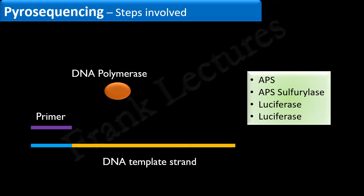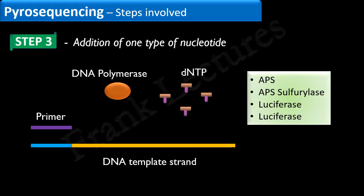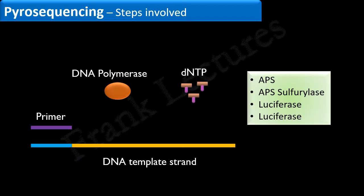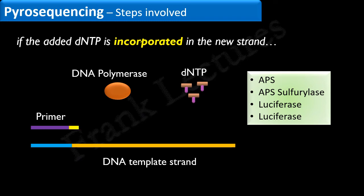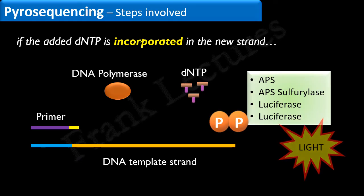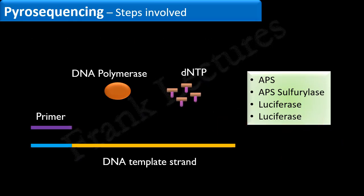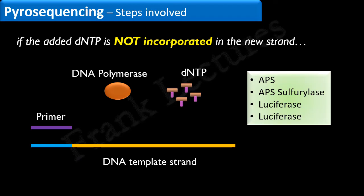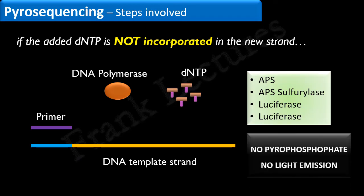After that, one of the four types of nucleotides is added. Note that only one type of nucleotide is added at a time — for example, if we are adding dCTP, then the solution contains only dCTP molecules. If the added nucleotide is incorporated in the new strand, pyrophosphate will be released and emission of light will take place. This light is detected by a detector and later used to interpret the unknown sequence. But if the added nucleotide is not incorporated, there will be no pyrophosphate and therefore no light emission.